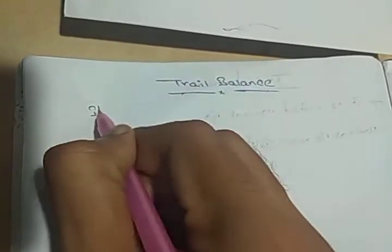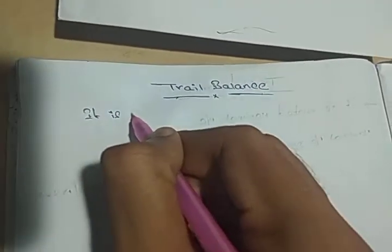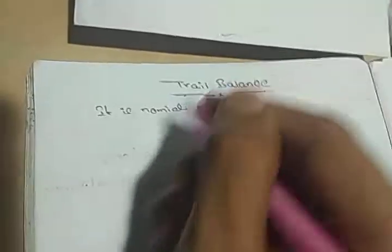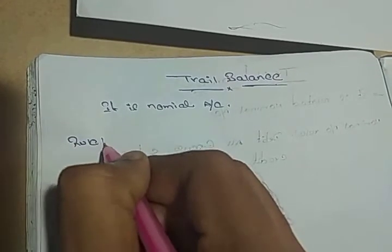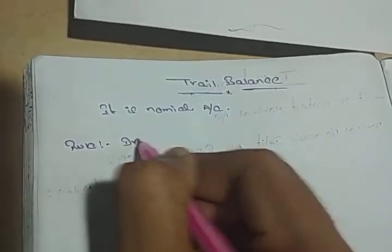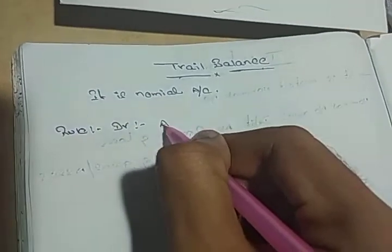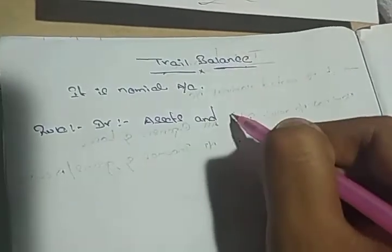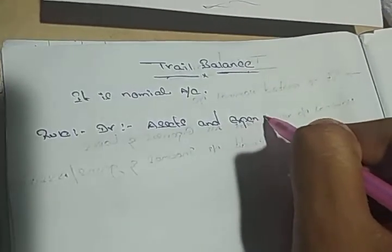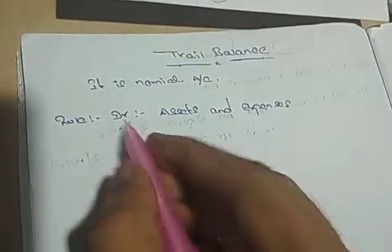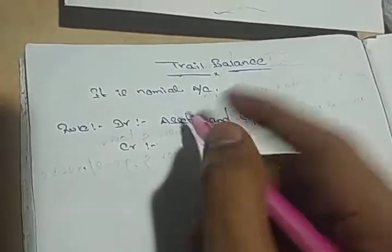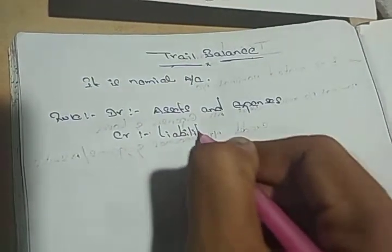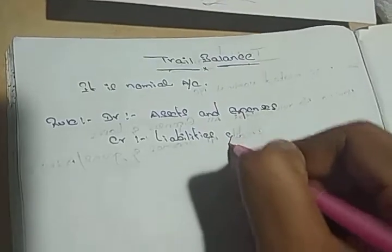Friends, it is related to nominal account. Rule: debit assets and expenses. In this, expenses, assets are debit. Credit: liabilities and incomes.